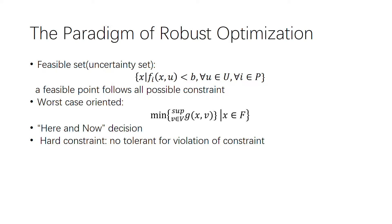For the objective function, we will find the worst case. We will find the minimum of the supremum of the objective function, which means x must be in the feasible set as described in the above equation.